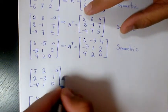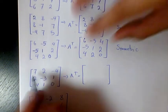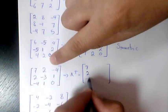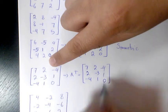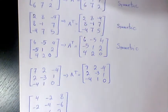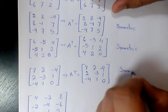Next one, the transpose is going to be 3 by 3: 7, 2, negative 4; 2, negative 3, 1; negative 4, 1, 0. Now if you compare it, that's exactly the same thing, so this one is also a symmetric matrix.